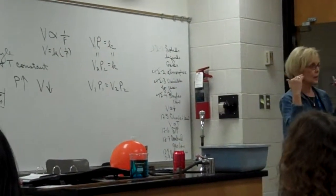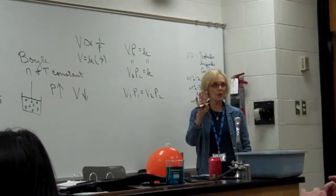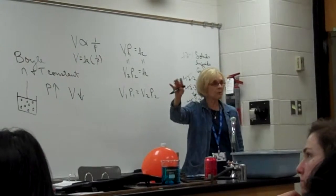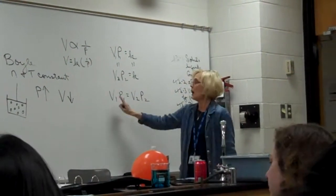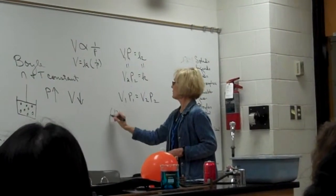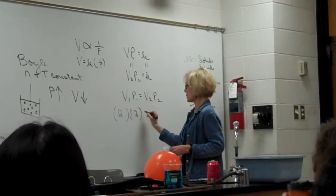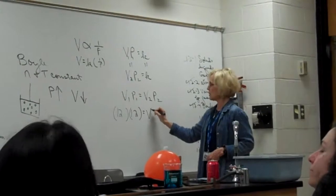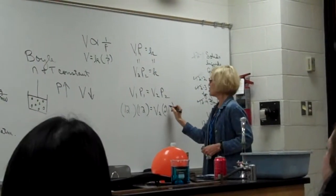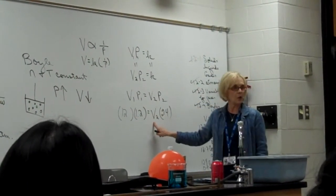We have a classic Boyle's Law problem: V1P1 = V2P2. There are four variables, and you're given three; solve for the fourth. Do we have V1? Yes — 12 liters. Do we have P1? Yes — 1.2 atmospheres. We are asked to find V2. And P2 is 2.4 atmospheres. Units check: V1 is liters, so V2 will be in liters.